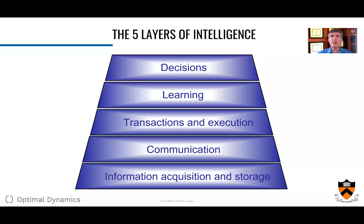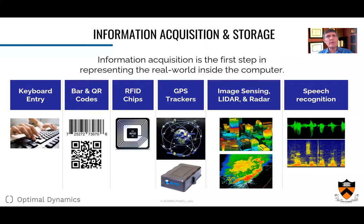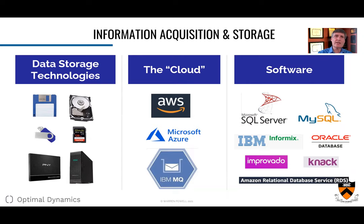The top layer is decisions — that's what I want to get to — but to make good decisions on a computer, you have to understand all five layers. Let's start at the bottom: information acquisition and storage. We start with basic things like keyboard entry, barcodes, RFID chips, GPS trackers, image sensing, and speech recognition. These then have to go into the computer and be stored using improving data storage technologies. Most of it all seems to end up on the cloud, and you can't ignore the powerful software that allows us to access this data.